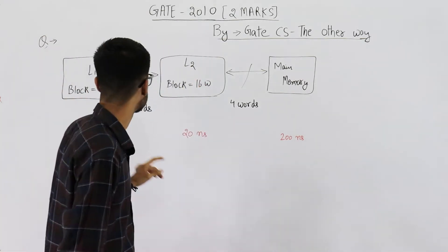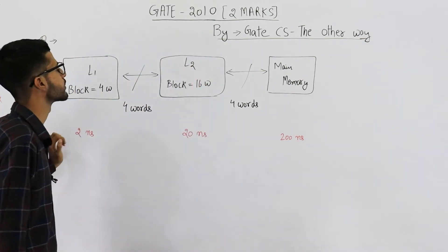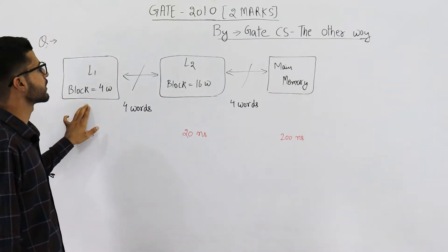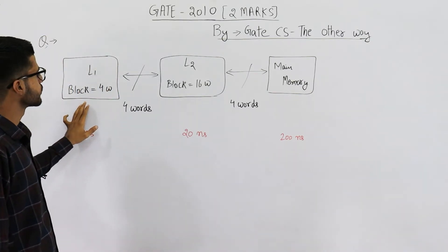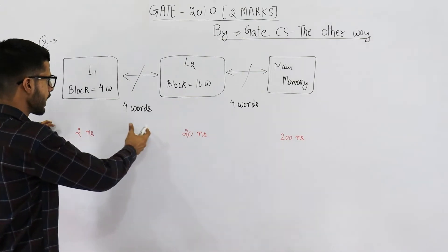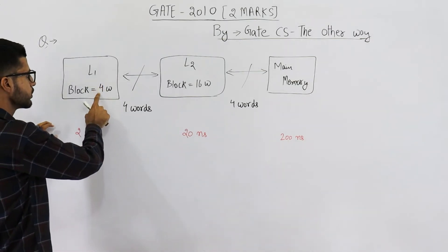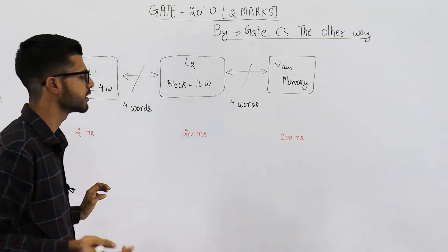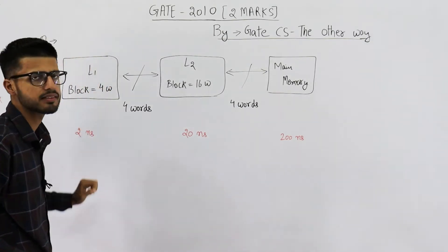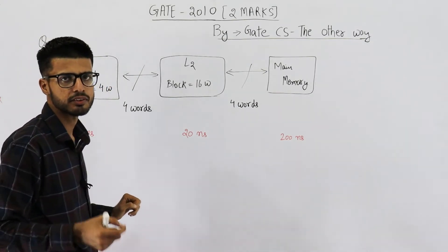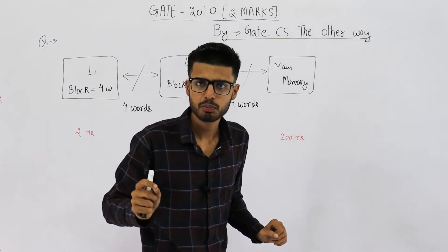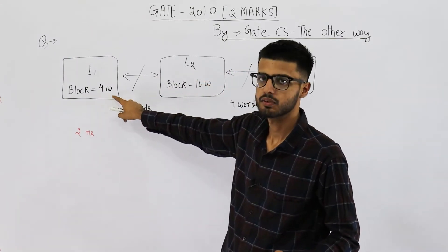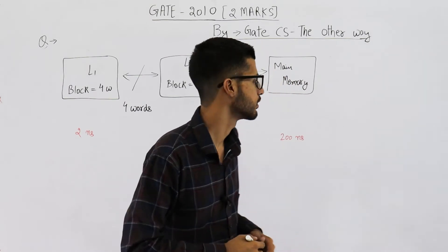It will be 4 words. You will consider this block size because there is a miss in this cache. So you will bring one block according to this size, because at the end of the day it is going to be placed in L1 cache, and any block placed in L1 cache will be of 4 words. So the first confusion is cleared.